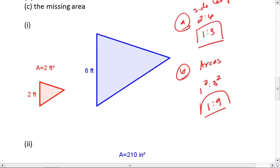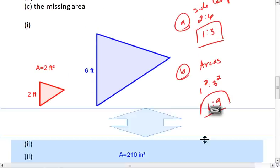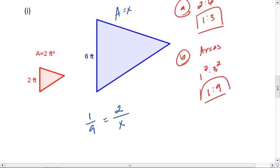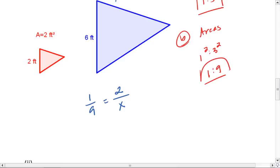If their areas are in a 1 to 9 ratio, so red to blue is in 1 to 9, we know red has an area of 2 and we want to find the area of blue. Then we can solve this proportion. I'm going to cross multiply, so I get X equals 2 times 9, which is 18. That's my area.